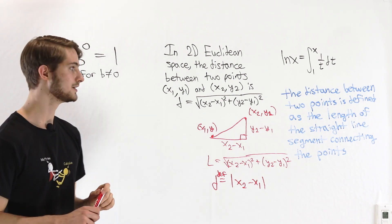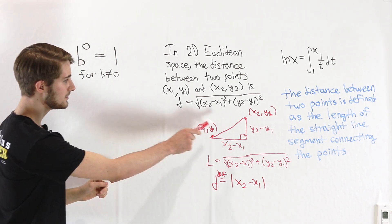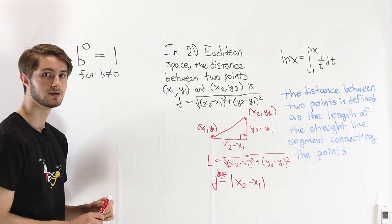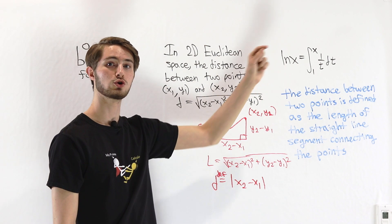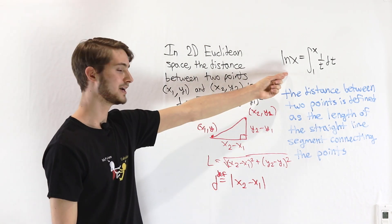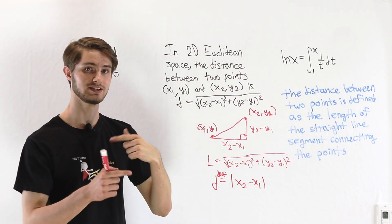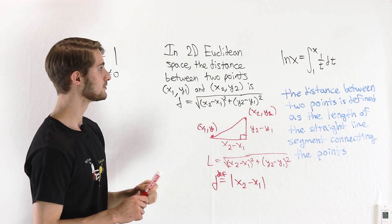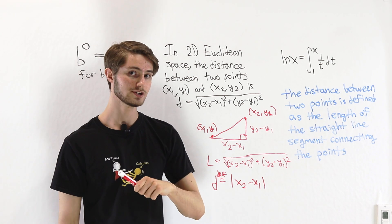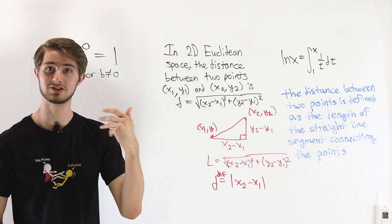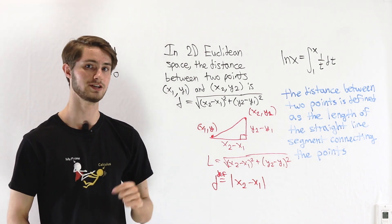Well, not necessarily, because just like with Euclidean distance, we can actually show that this integral definition is equivalent to defining the natural log as the inverse of e to the x. And therefore, if this is our definition of the natural log, the fact that it's the inverse of e to the x becomes a theorem instead of a definition.